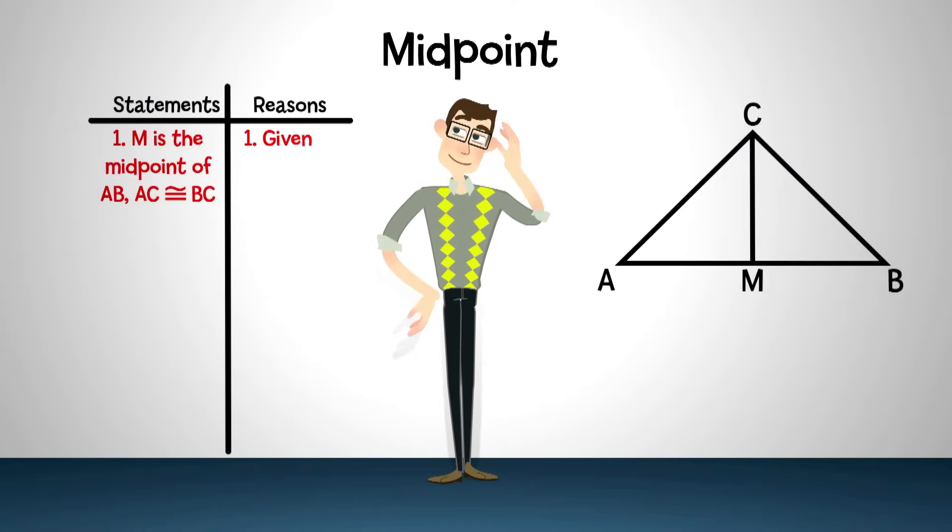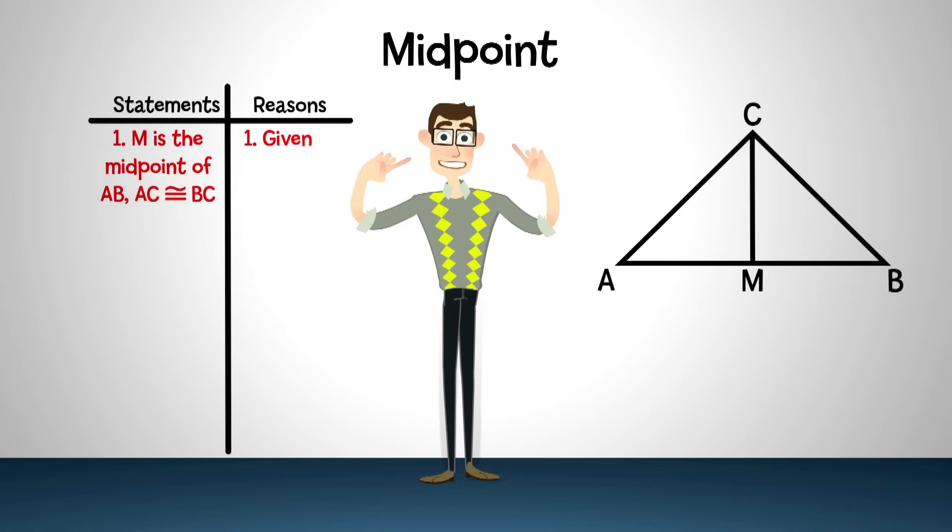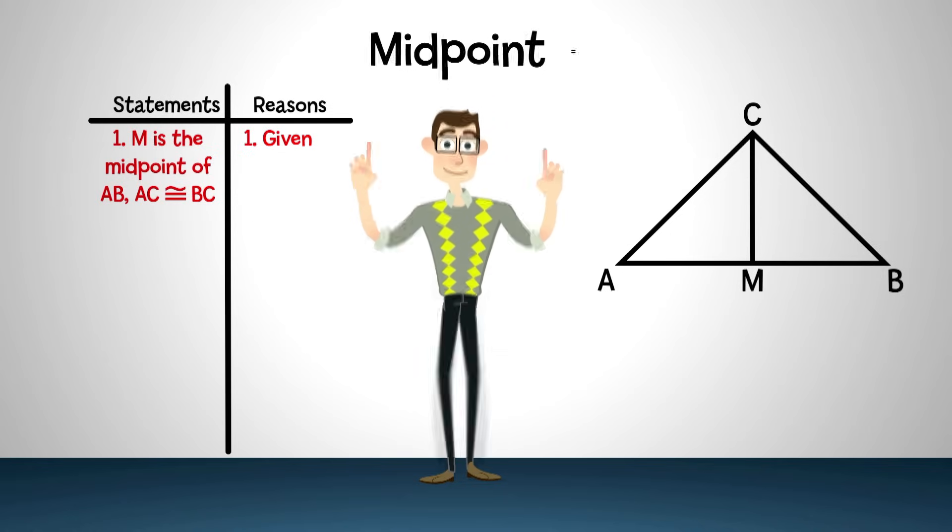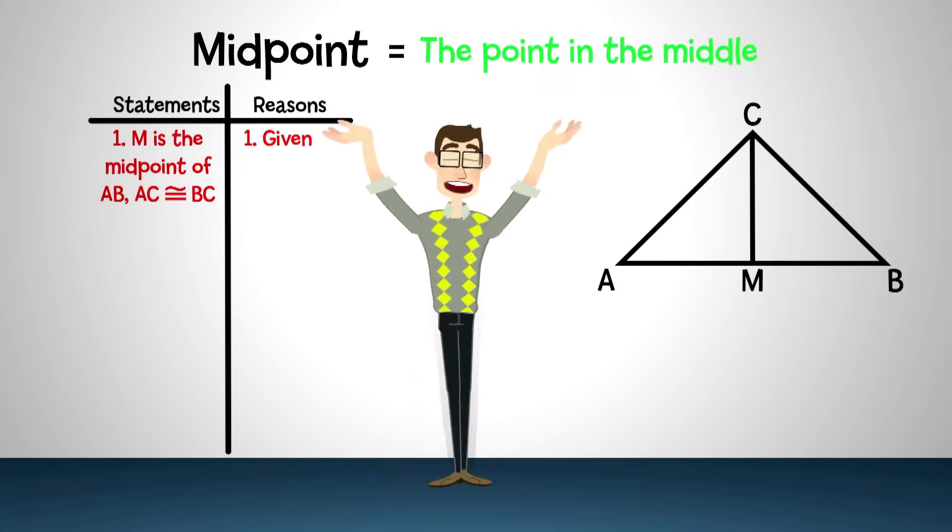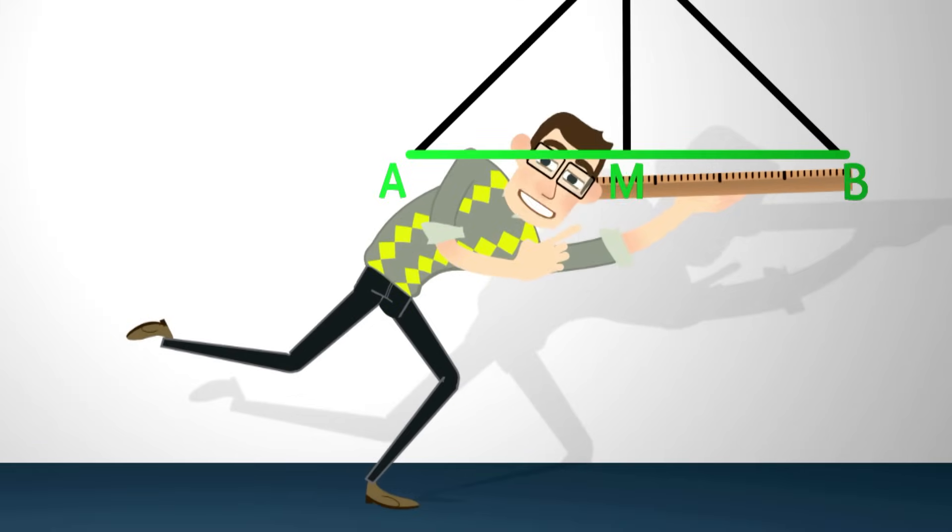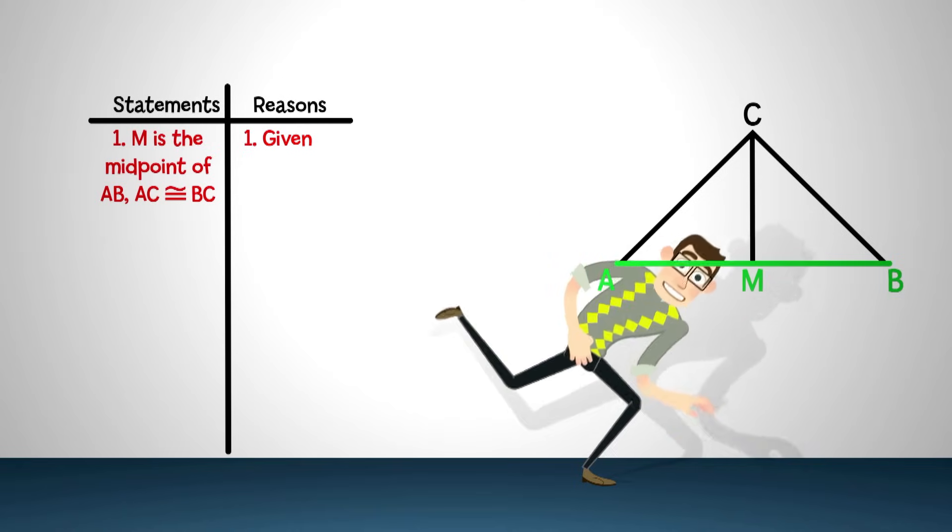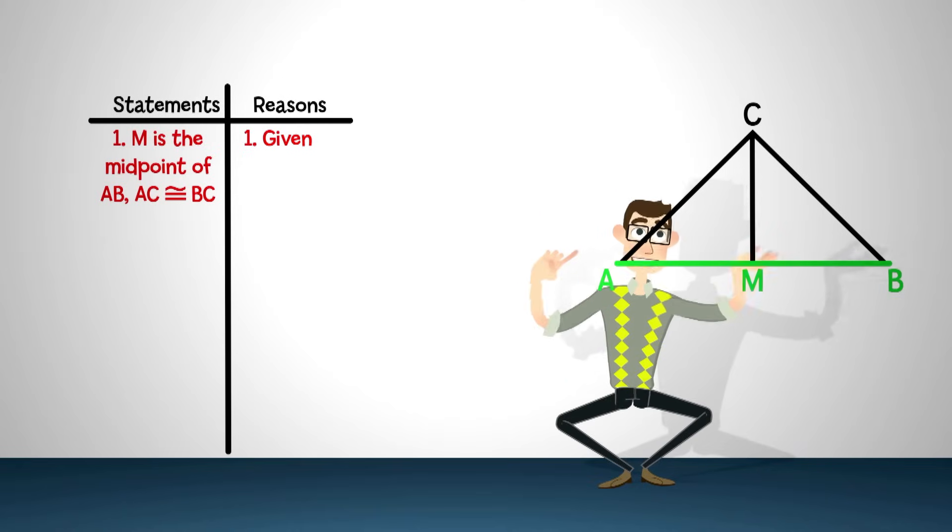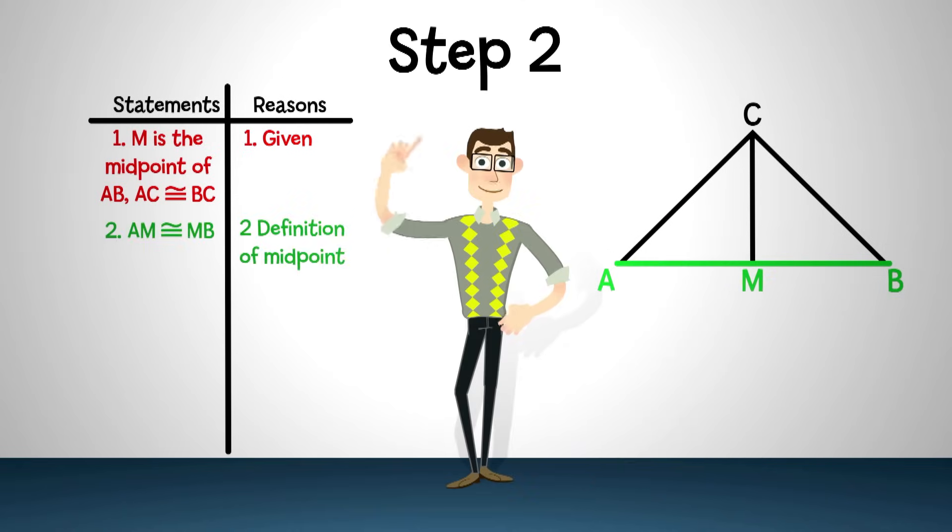Now let's see, what does the midpoint tell us? Luckily, I know the definition of midpoint. It is basically the point in the middle. So, what this means is that AM and BM are the same length since M is the exact middle of AB. In other words, the bottom side of each of our triangles are congruent. I'll put that as step two.